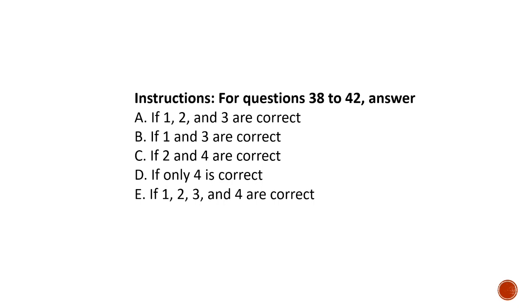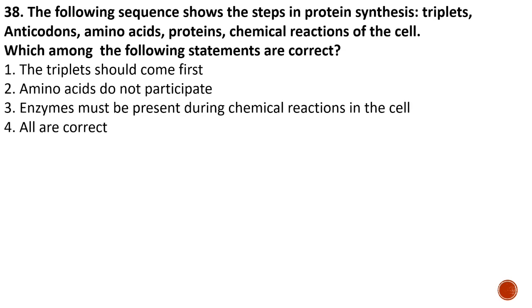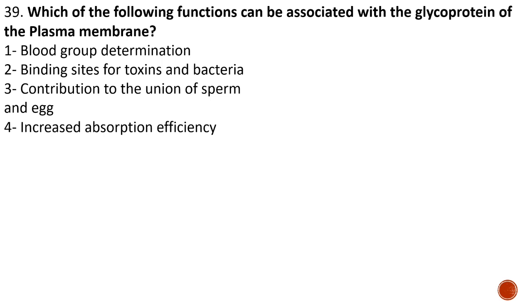For the next set of questions, the instructions change: choose A if one, two, and three are correct; B if one and three are correct; C if two and four are correct; D if only four is correct; E if all four options are correct. Question thirty-eight: protein synthesis steps — triplets, anticodons, amino acids, proteins. Statement one: the triplet is correct; statement two: amino acids do not participate — wrong; statement three: enzymes must be present during chemical reactions in the cell — true. Question thirty-nine: glycoproteins of the plasma membrane — one) blood group determination — true; two) binding sites for toxins and bacteria — true; three) contribution to union of sperm and egg — true; four) increased absorption and efficiency — not true. The answers are one, two, and three.